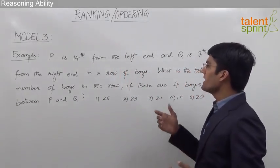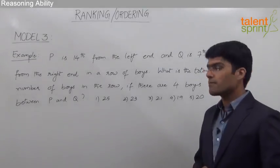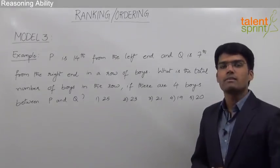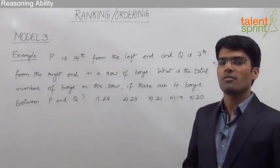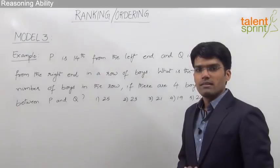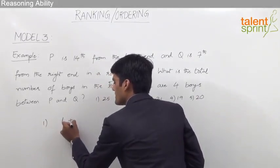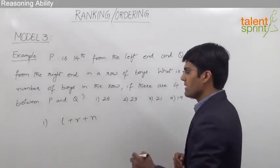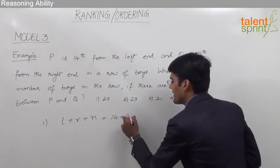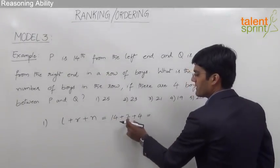The given question is: P is 14th from the left end and Q is 7th from the right end in a row of boys. What is the total number of boys in the row if there are 4 boys between P and Q? There are two possible answers. The first answer is the position from the left end plus the position from the right end plus the number of persons in between: 14 plus 7 plus 4, which equals 25.